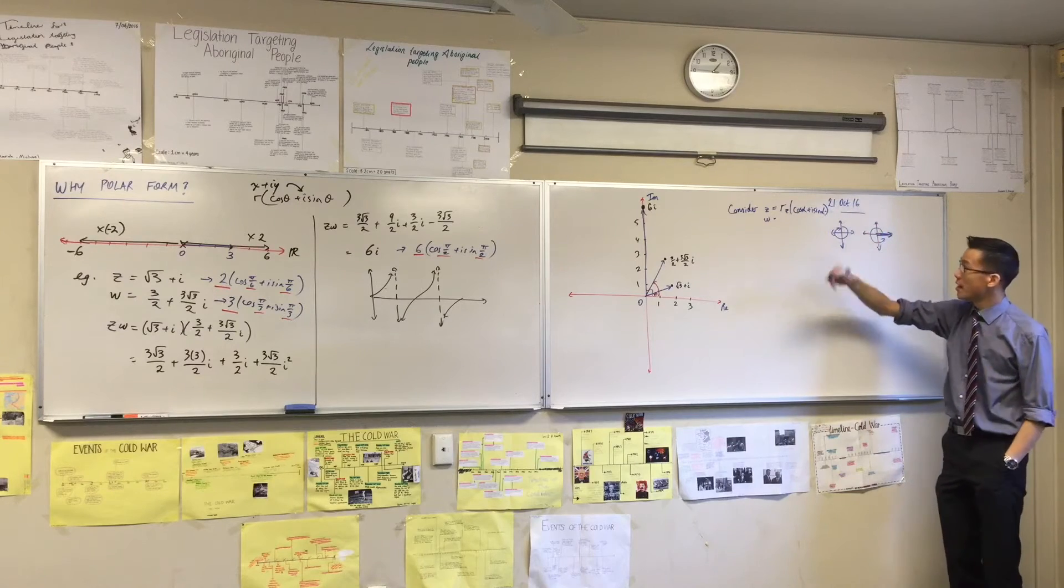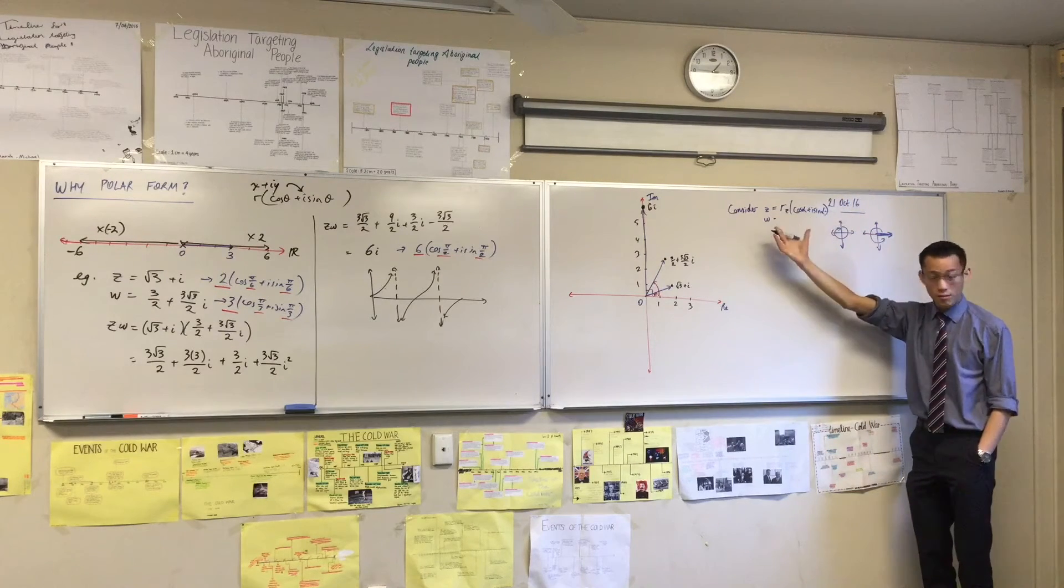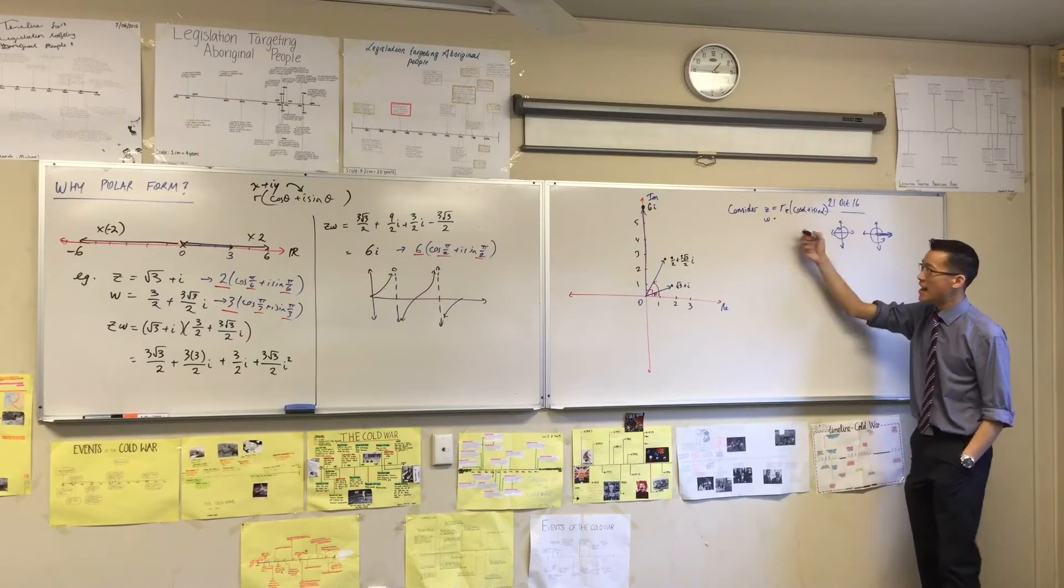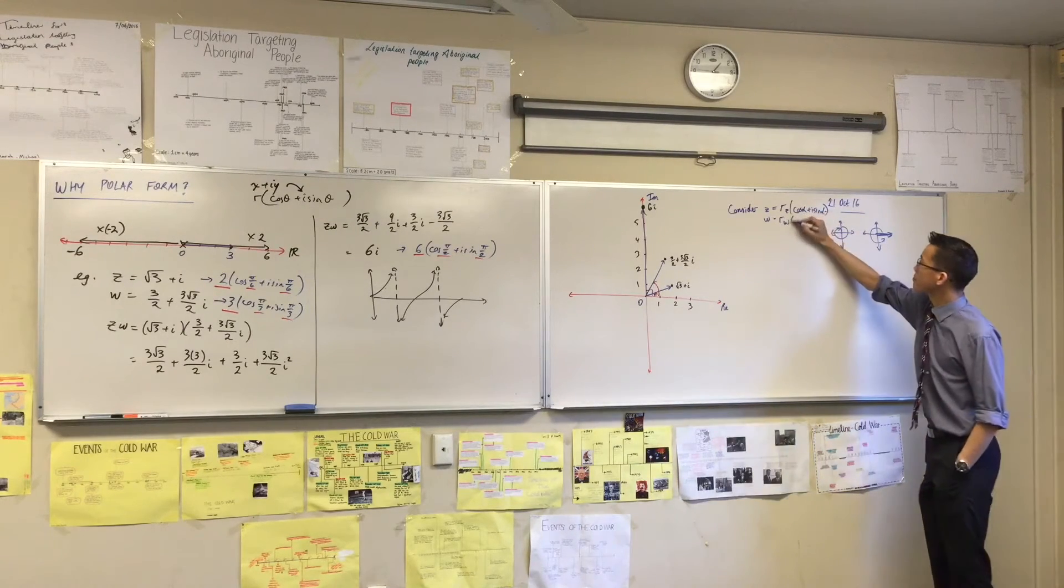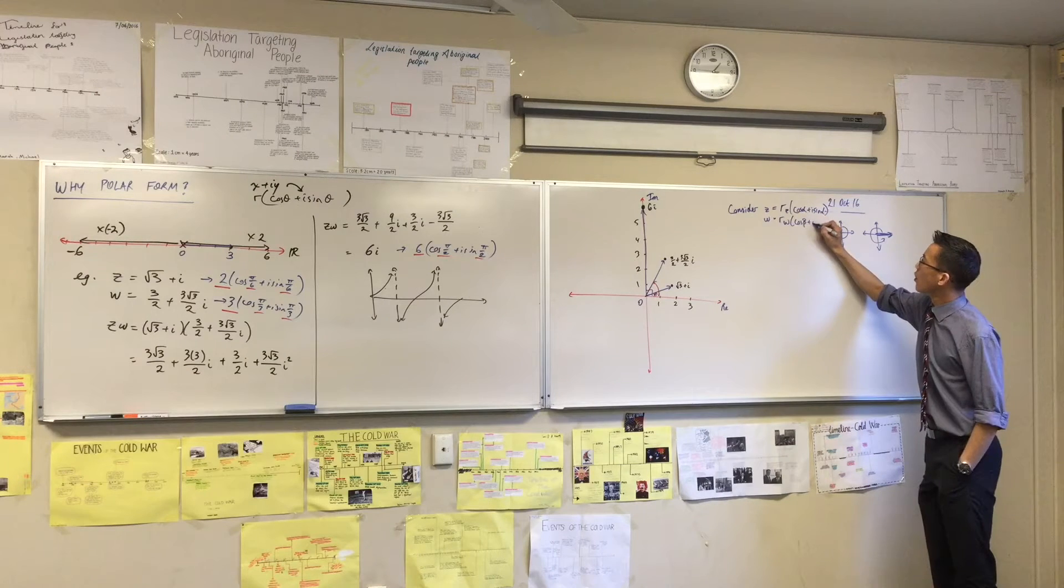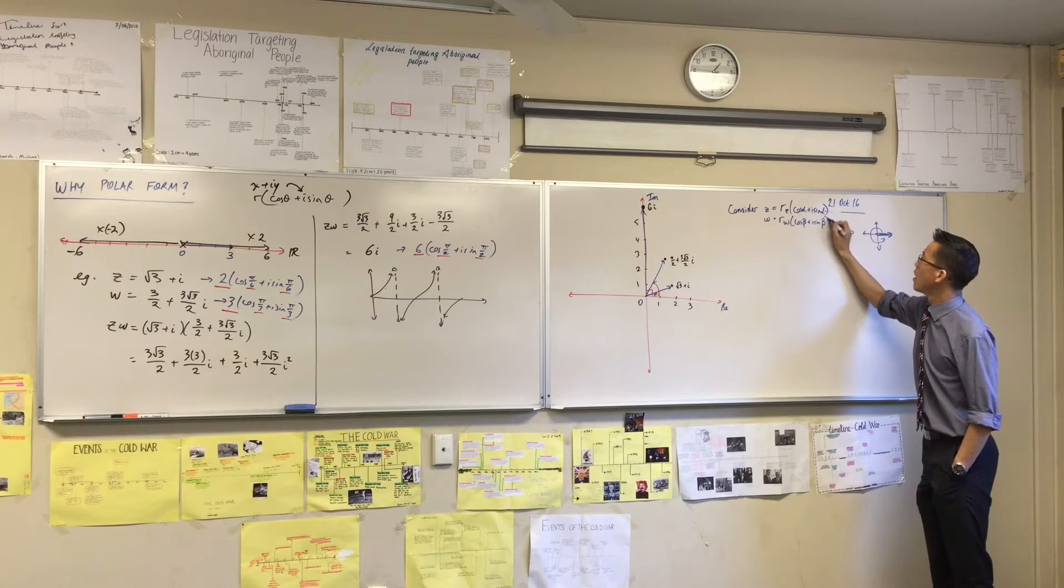Like that. That's my first complex number. It could be anywhere, right? Depending on what these elements are. And now I just need another one, W. So I'm going to give it its own modulus. And I'm going to give it its own argument, okay?